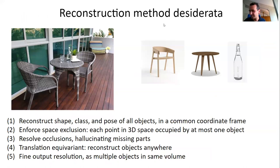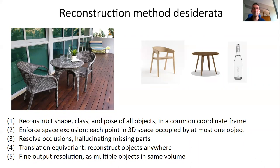Here are the desiderata that inspired our method. We want to reconstruct the shape, class and pose of all objects in one common coordinate frame, enforcing spatial exclusion — every point in 3D space should be occupied by at most one object — and trying to resolve occlusions by hallucinating missing parts. We want a model that is translation equivariant, meaning it should react to pixel patches at different locations regardless of where they were at training time. We also want fine output resolution, since with multiple objects in a scene, each occupies a smaller portion of the volume.